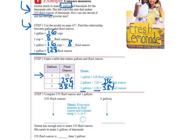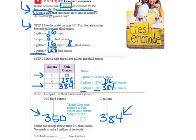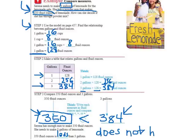So we're going to think what we need. She has the powder mix that makes 350. So that's what she has. She needs three gallons, which we said was 384 ounces. Here's what she has. Here's what she needs. Does she have enough? No, because 384 is greater than what she has, the 350. So 350 fluid ounces is less than three gallons. So Serena does not have enough mix to make three gallons of lemonade.